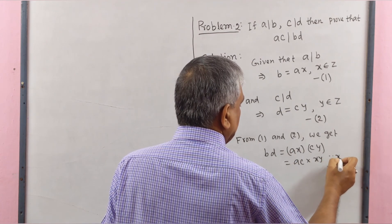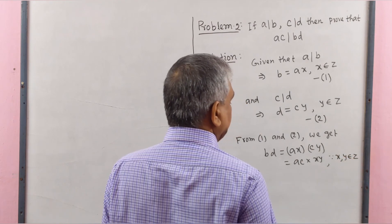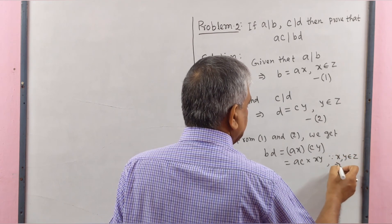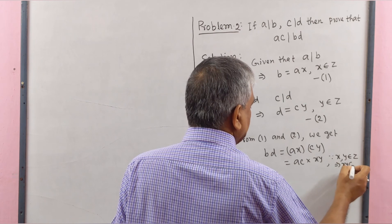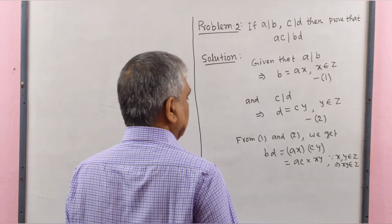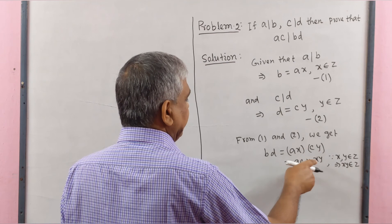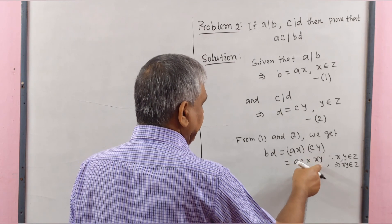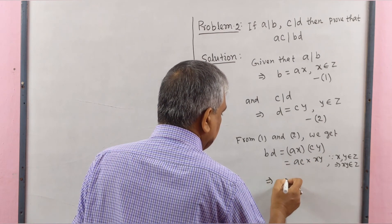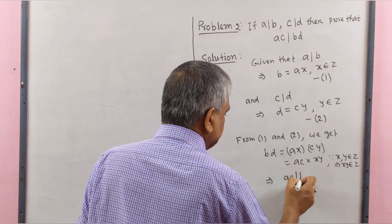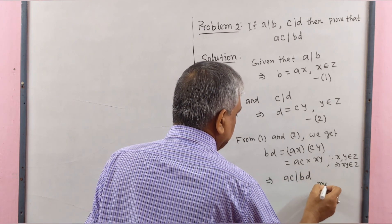Since XY belongs to Z, it implies that X multiplied by Y belongs to Z. Therefore, BD equals AC multiplied by an integer. That means AC divides BD. Proved.